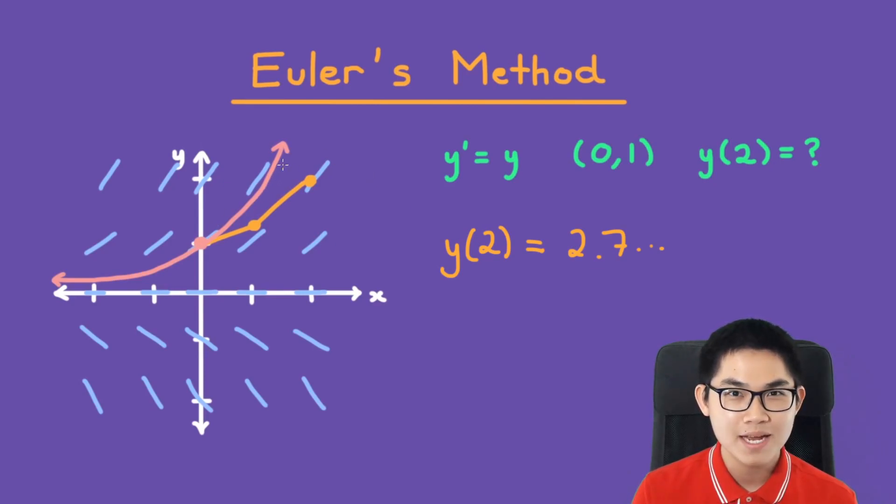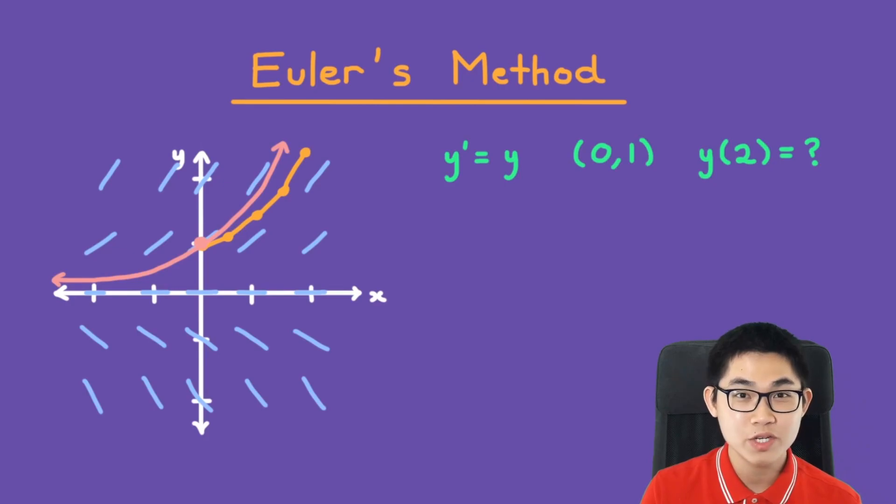but it's still not accurate enough. There is one way you can make it even more accurate. And the way to do it is to draw more lines. So as you can see here, we now have four lines. And the more lines we have, the closer we get to its true value.